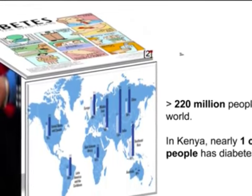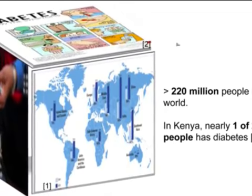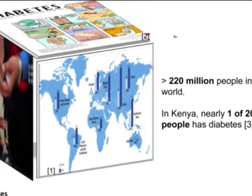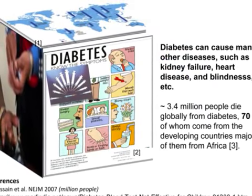Statistical analysis by the WHO shows that diabetes is a global disease. The situation in developing countries is particularly severe. In Kenya, nearly 1 out of 20 people has diabetes.